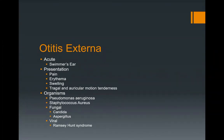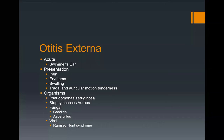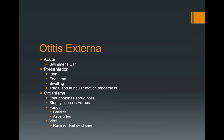Acute otitis externa is basically acute inflammation. Sometimes people describe this as swimmer's ear. Typically, patients present with ear pain, erythema or swelling, and pain upon tragal motion, or auricular motion tenderness when you tug on the patient's ear. The different types of organisms that can cause otitis externa include Pseudomonas, staph infections, fungal infections in patients who are immunocompromised or immunosuppressed.